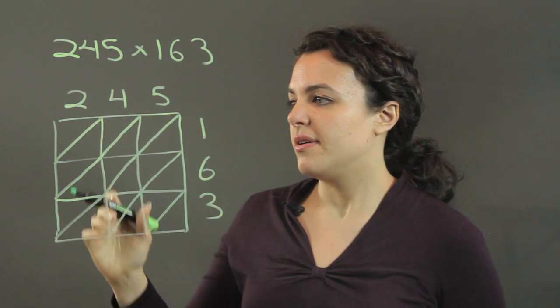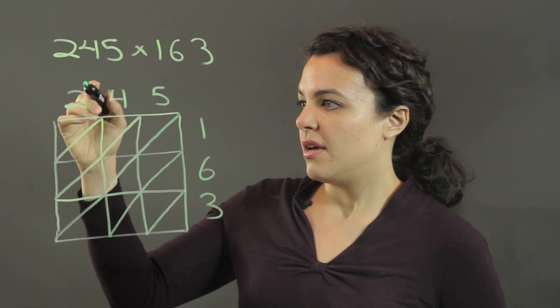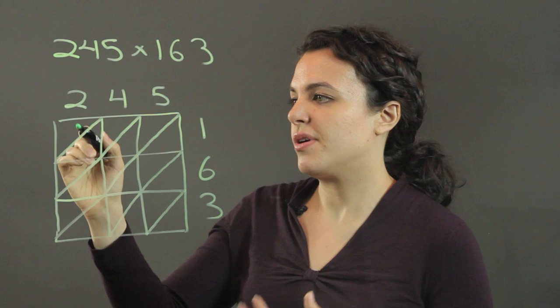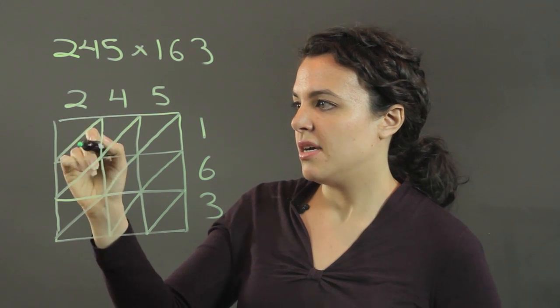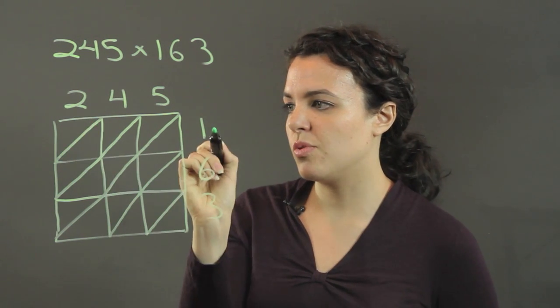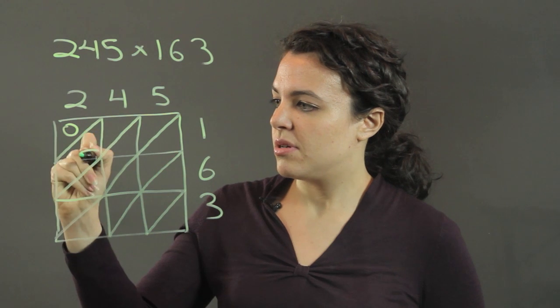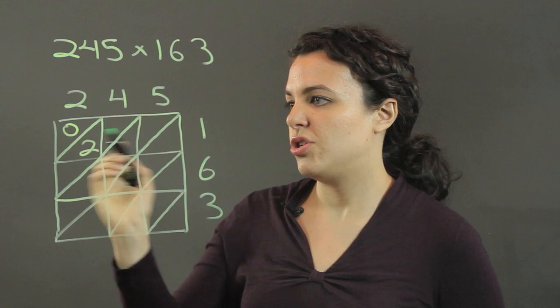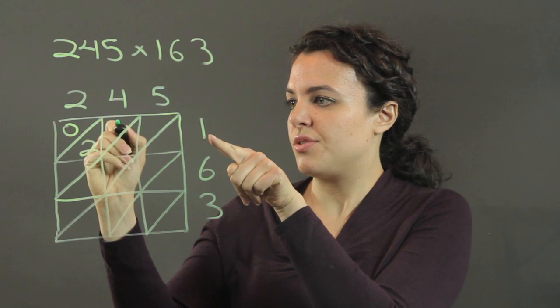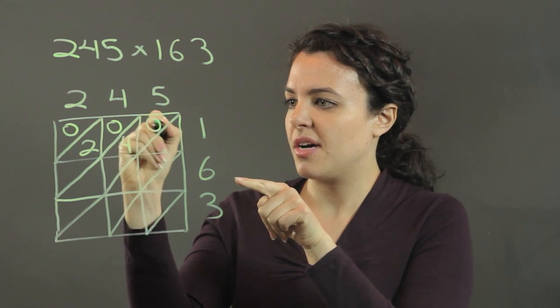So we're going to multiply our numbers in the following fashion for each box. I look at the column it's in and then the row that it's in. I multiply the numbers accordingly. So in this box, I have two in my column and one in my row. So 2 times 1 is 2. And I'm going to write 0, 2 for 2. Here, 4 times 1 is 4, 0, and 4. Here, 5 times 1 is 5, 0, and 5.